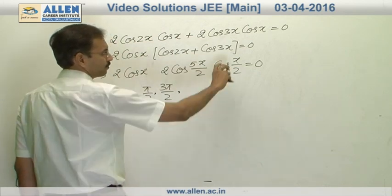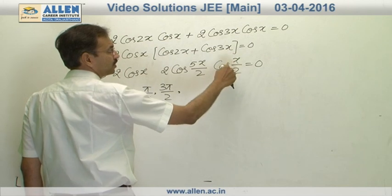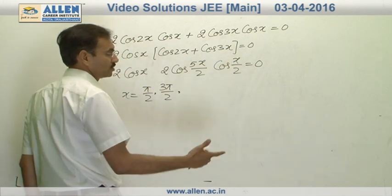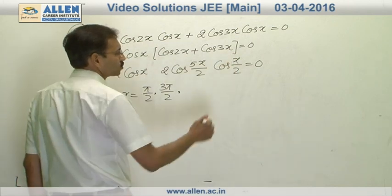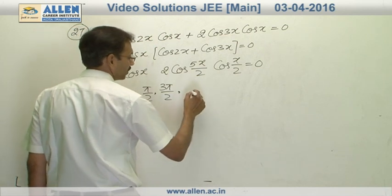If x is π, it will become π by 2. The next will be 3π by 2, but 3π is not possible for us to take. So we will consider x as π only.